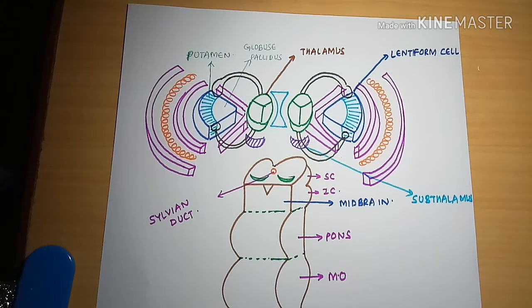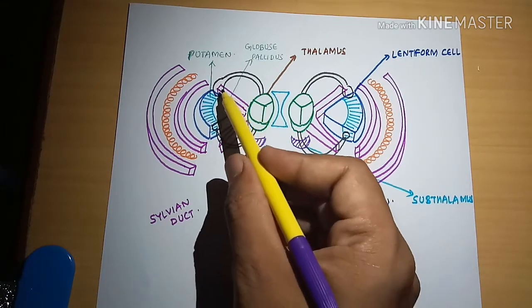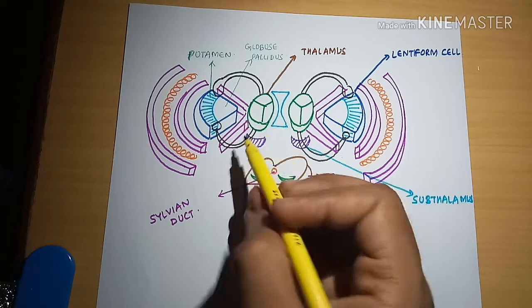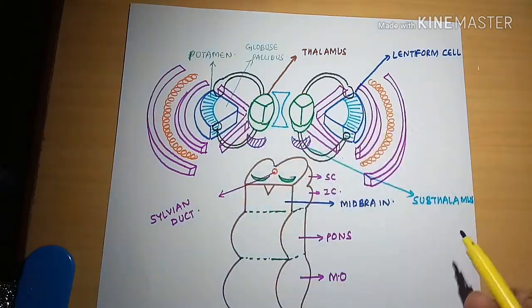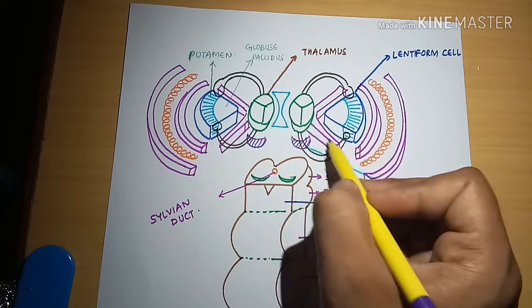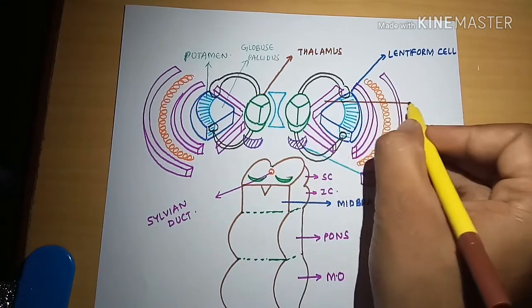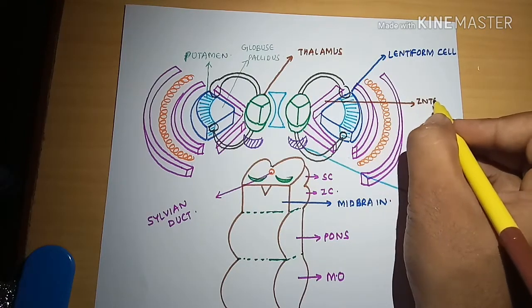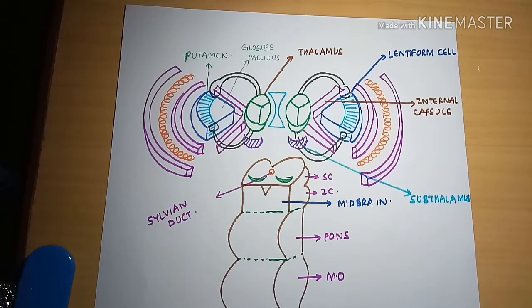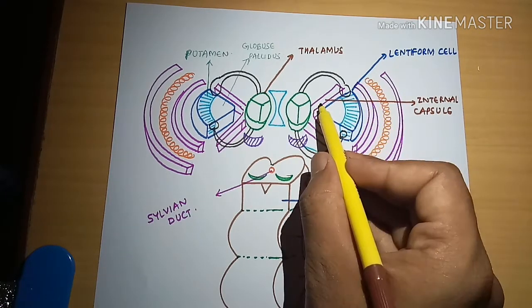In between the lentiform nucleus and the thalamus, there is white matter present where both the corticospinal and spinothalamic tracts are running. This white matter is called the internal capsule. This structure present between the lentiform nucleus and the thalamus is the internal capsule.